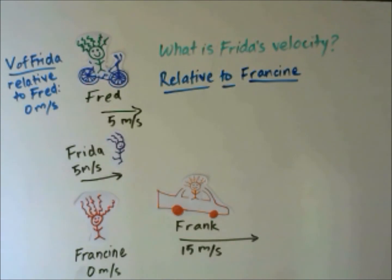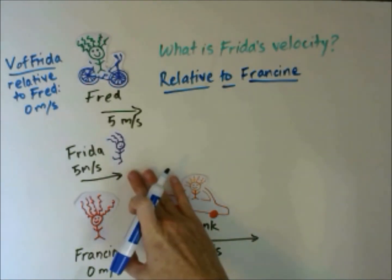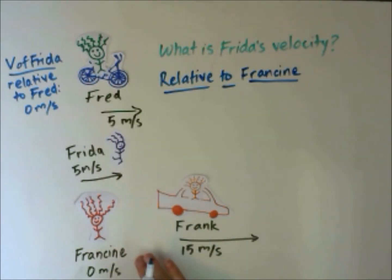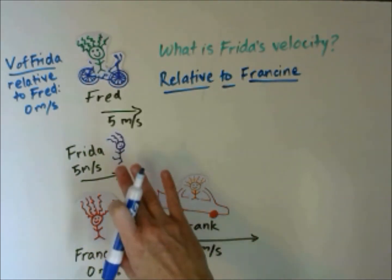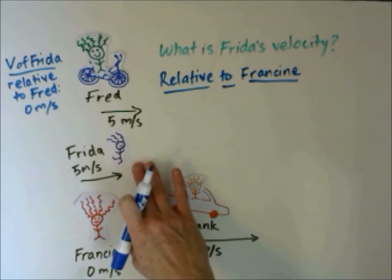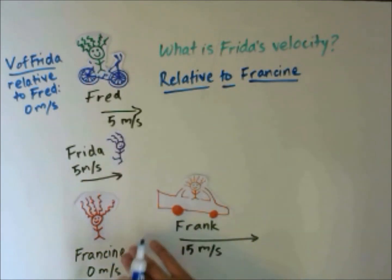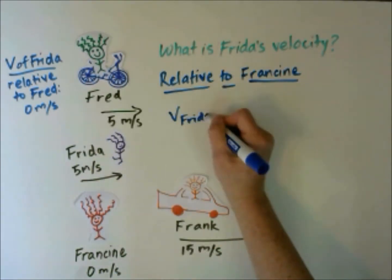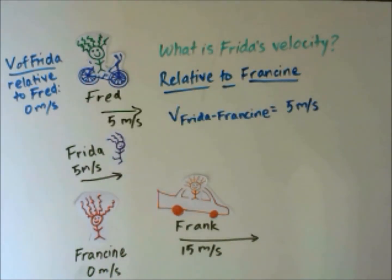Finding the velocity of Frida relative to Francine is simple because Francine is our stationary frame of reference. So since she's not moving, whatever Frida's velocity is will be the velocity relative to Francine. The velocity of Frida relative to Francine is 5 meters per second.